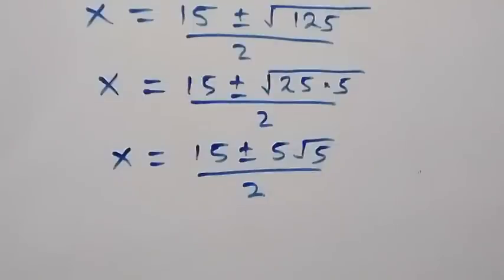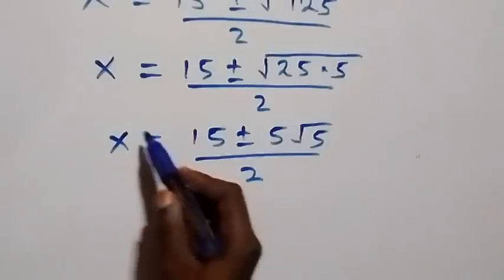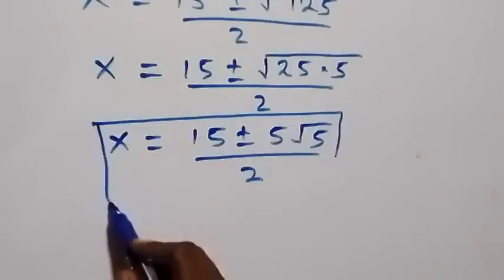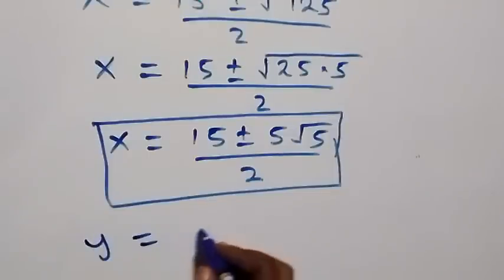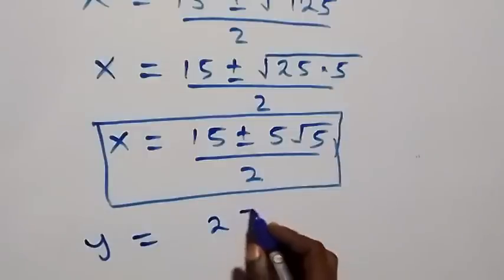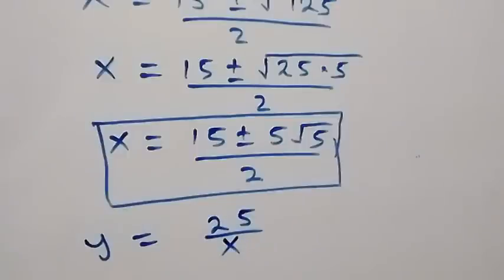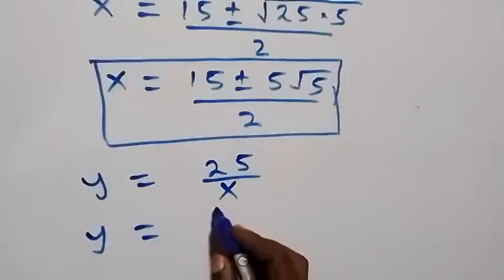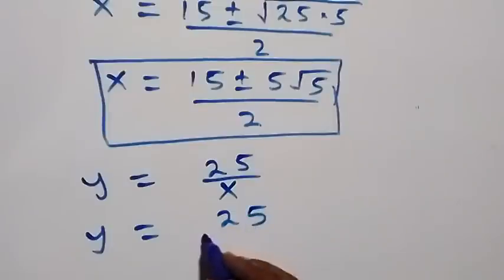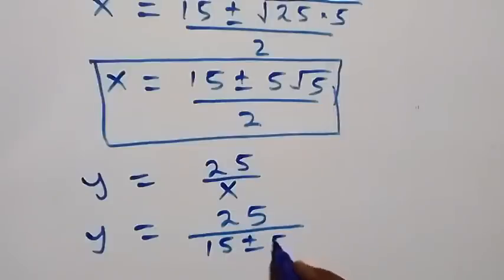To get the corresponding values of y, we use equation 4: y = 25/x. So y = 25 ÷ ((15 ± 5√5) / 2), which means 2 moves up and multiplies 25, giving y = 50 / (15 ± 5√5).